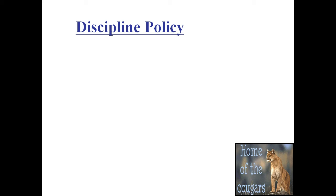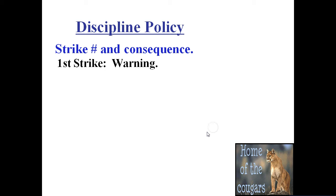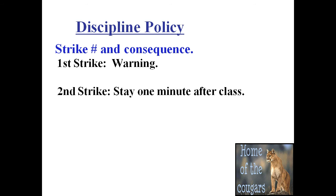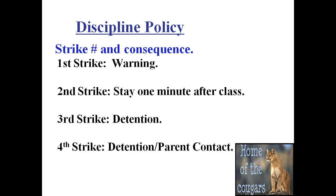Let's talk about the discipline policy. If these expectations are not met, I mark strikes on a seating chart, and every day I erase those strikes so you have a clean slate. First strike is a warning. Second strike is staying one minute after class. Third strike is detention. Fourth strike is detention and parent contact. Fifth strike is a referral. These strikes generally come from defiance, and if something extremely bad happens, I can skip strikes — for example, if you slug somebody, I'll move you directly to the fifth strike.